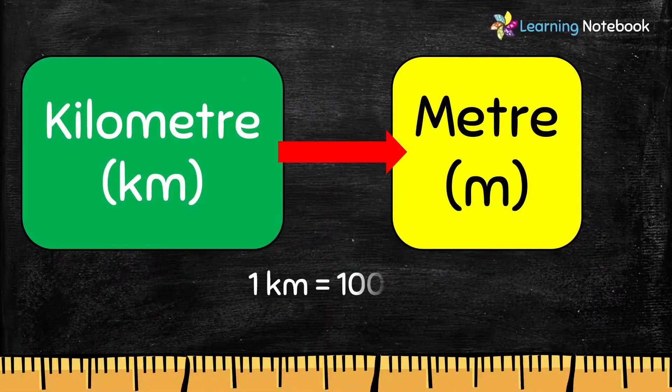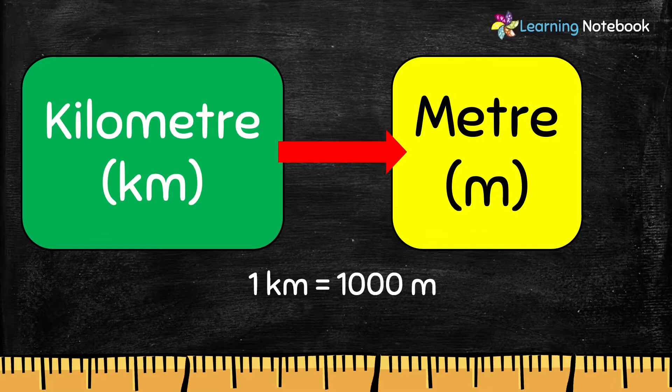Kilometer and meter both are the units of measuring length. Kilometer is denoted by km and meter is denoted by m. So, to convert kilometer into meter, we first need to know that 1 kilometer equals to 1000 meters.